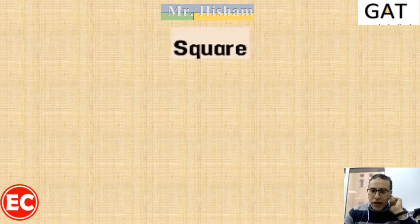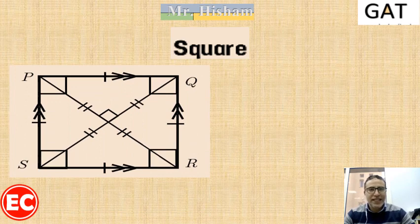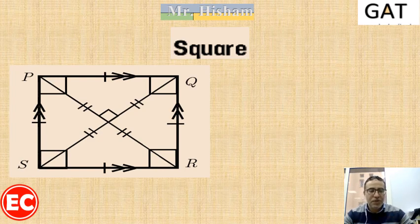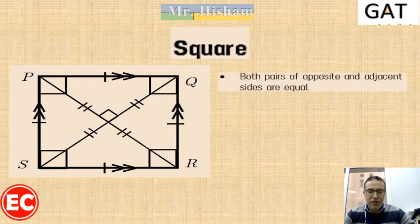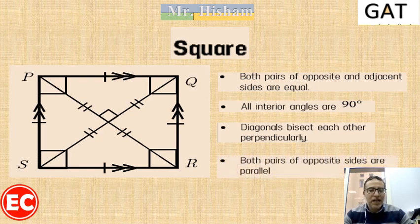The fifth quadrilateral is the square. The square has all the properties of the parallelogram, the rectangle, and the rhombus combined. So in the square: each pair of opposite sides are equal and parallel, all four sides are equal, all interior angles equal 90 degrees, diagonals bisect each other, diagonals are equal in length, diagonals are perpendicular to each other, and both pairs of opposite sides are parallel.